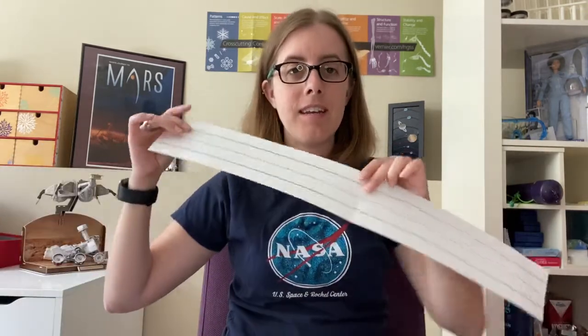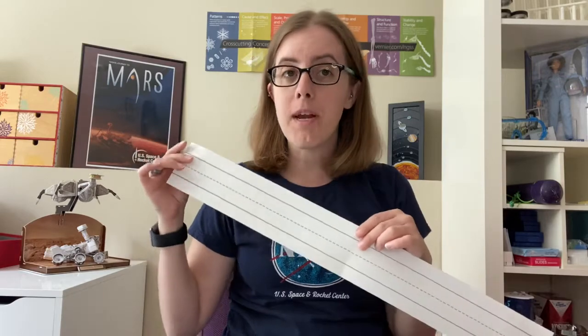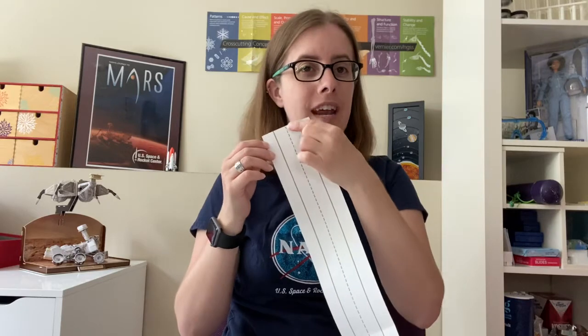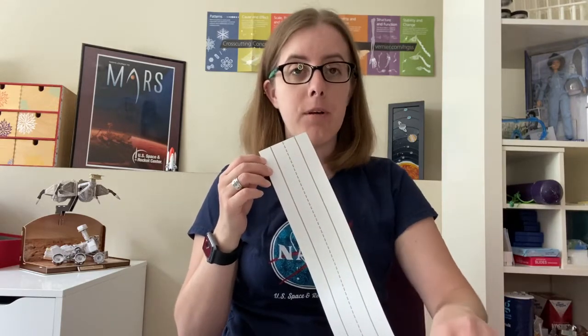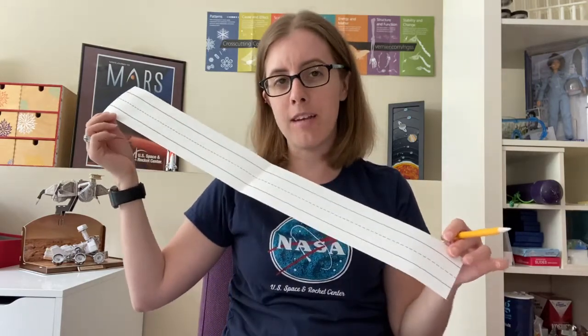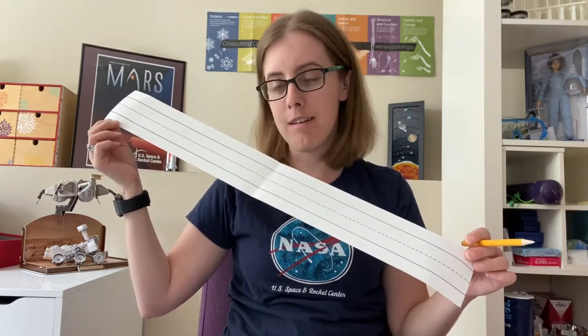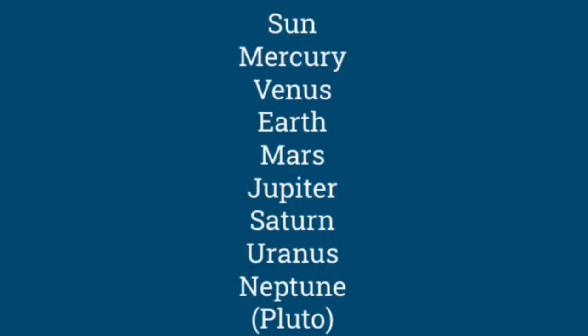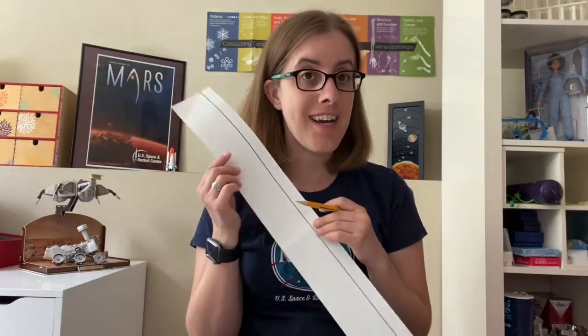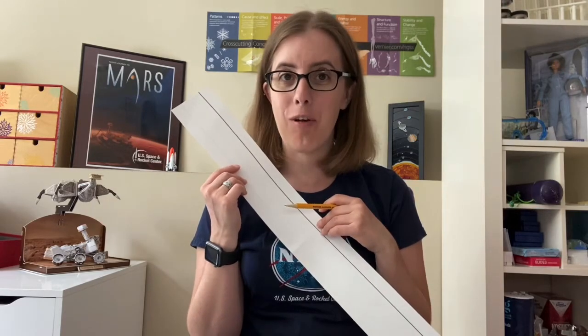To begin, take your paper or sentence strip and make a prediction of how far apart the planets are from the sun. On one end, lightly with your pencil, make your prediction. Write sun all the way to our dwarf planet friend Pluto if you want. Remember you can always hit pause on this video so you can write the name of the planet before moving on. When you're done making your prediction, let's turn it over to the other side and see how far apart the planets really are.